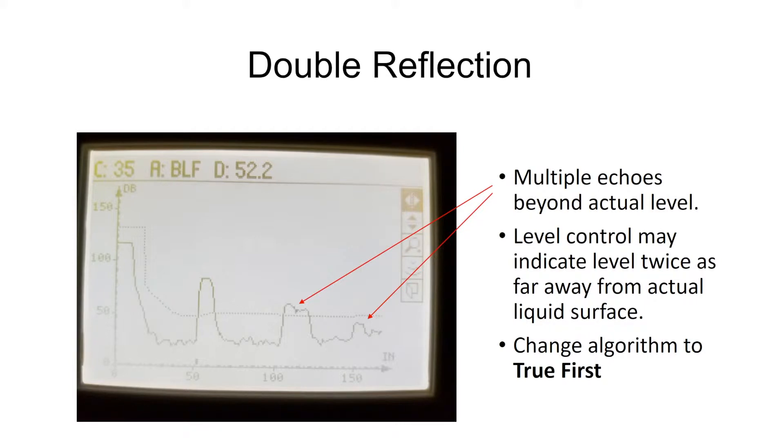In this example, we show a phenomenon called double reflection. The way ultrasonics work is the sensor creates noise, the noise goes down, bounces off the level, comes back up, we measure time of flight. In a lot of applications, if you have a flat roof or even a parabolic or curved roof, we can get a double reflection, and if everything aligns right, the double or second or third reflection can be stronger than the first reflection, and the level control picks that as our level.